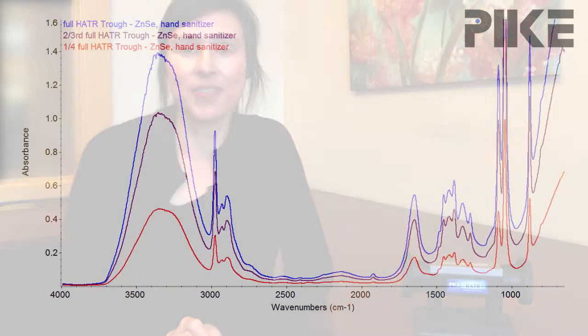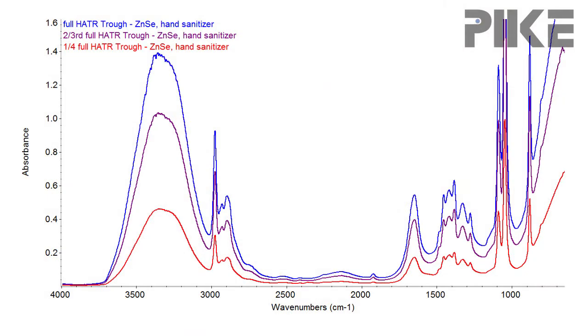You can see from the spectra that depending on how much surface area I covered of the crystal, the strength of the absorbance bands changes. So just to recap: when doing quantitative analysis, cover the surface area completely with your sample. Thanks for joining us and we'll see you next time.